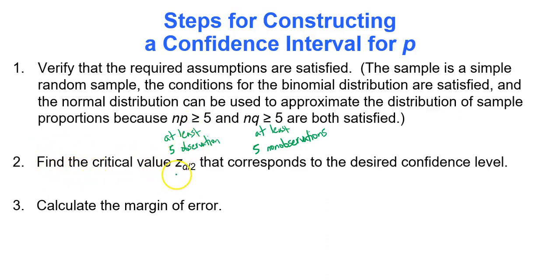Step two is to find the critical value. Remember that's the data value whose area to the right is alpha over 2. Alpha is the significance level. Alpha is 1 minus the confidence level.